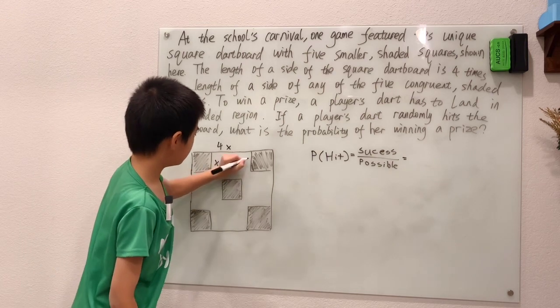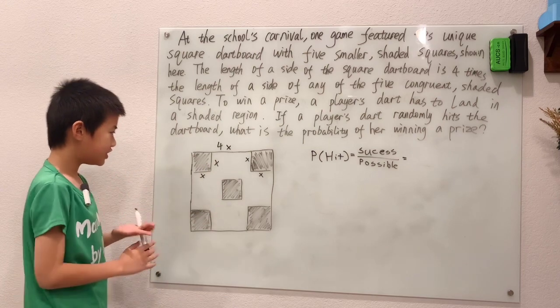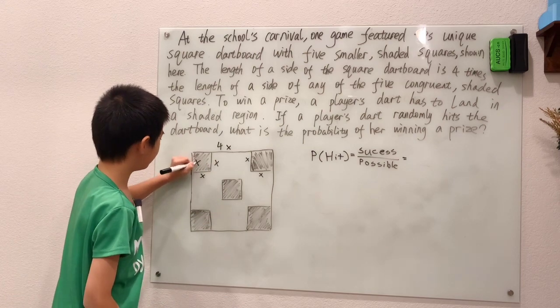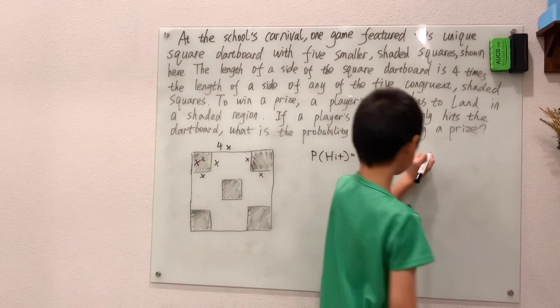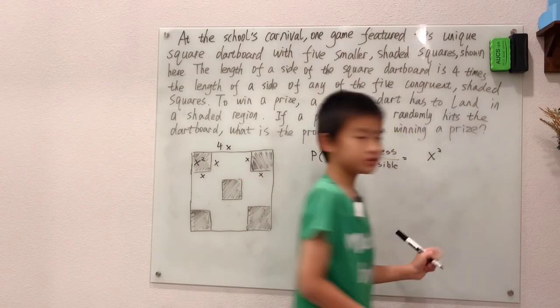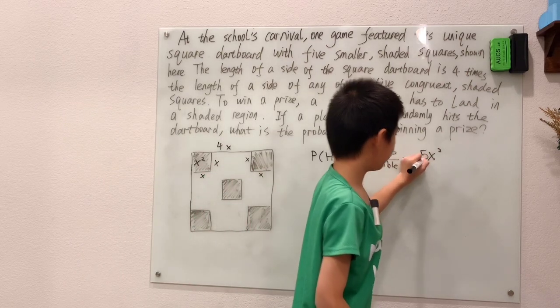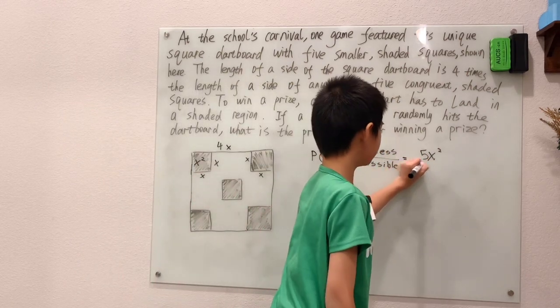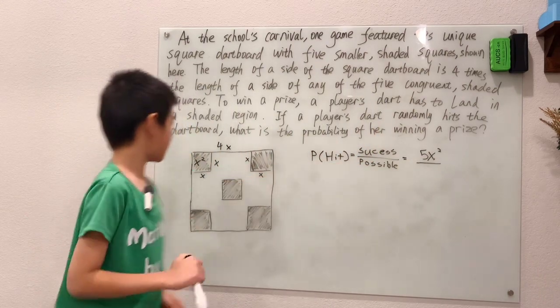All these other squares have length x. So each of these squares has x squared area. Each square has area x squared, and there are five of those little squares, meaning the success is just 5x squared.